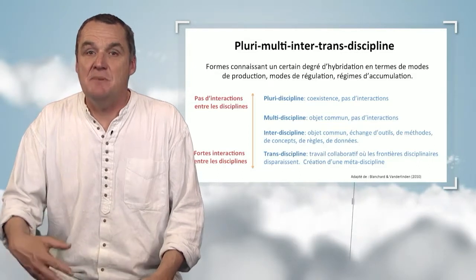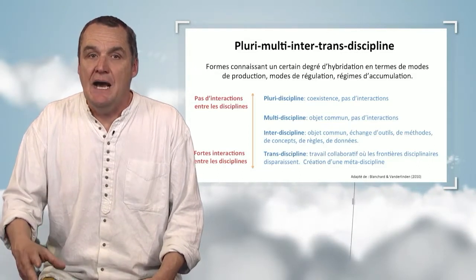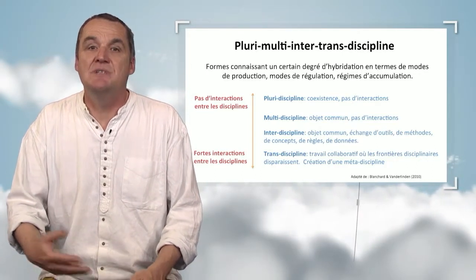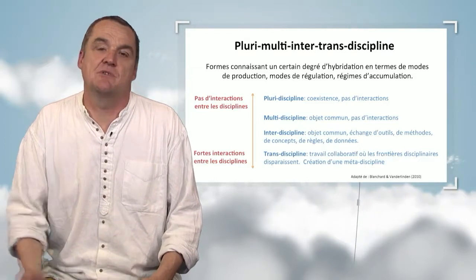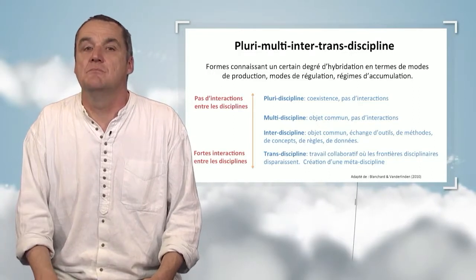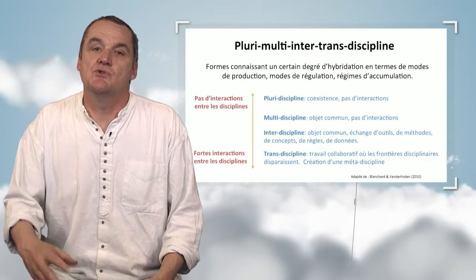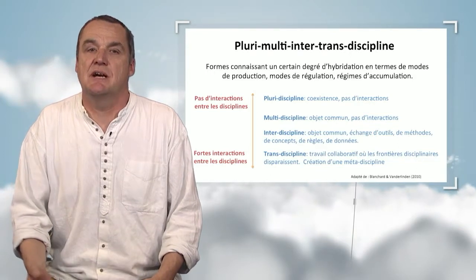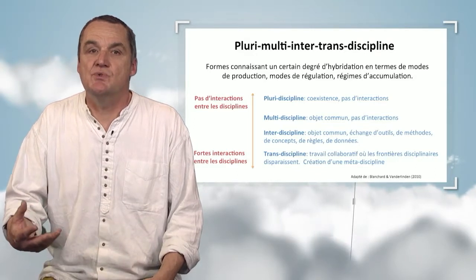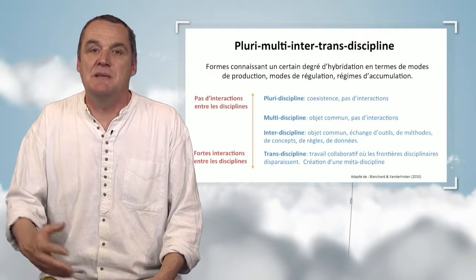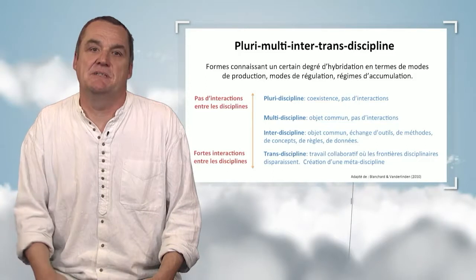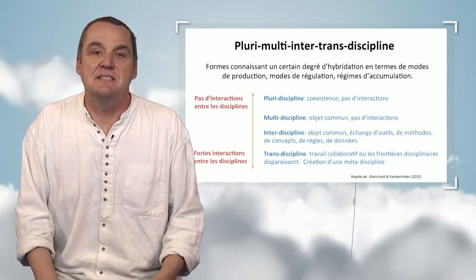The discipline as a control principle implements control by using regulation methods in places where knowledge can be accumulated and redistributed — for instance, in universities, during disciplinary reviews, or in specialized publications where data is contained and redistributed. Interdisciplinarity, therefore, is where sciences are produced and the control system is threatened.